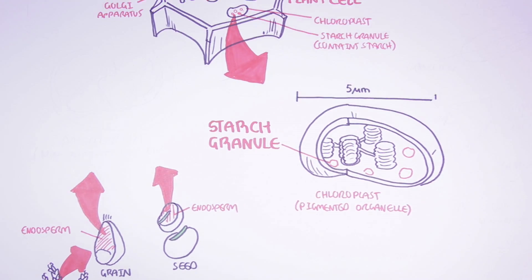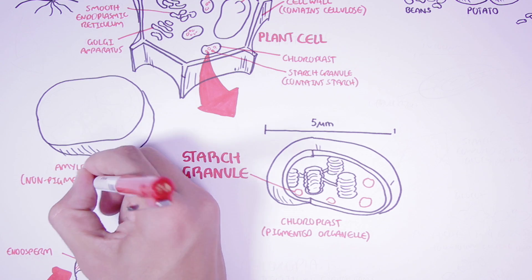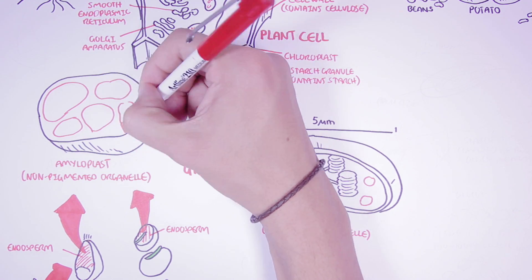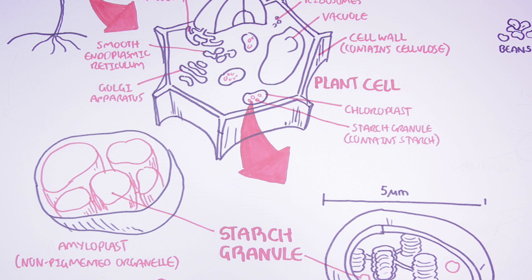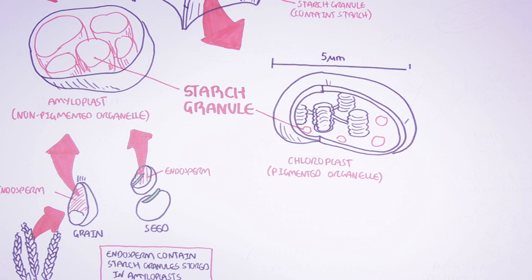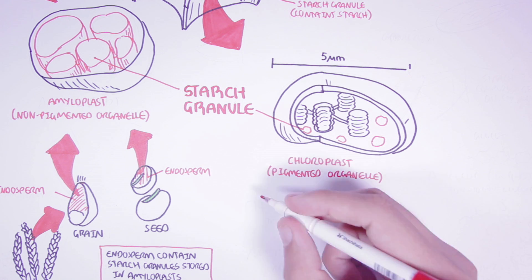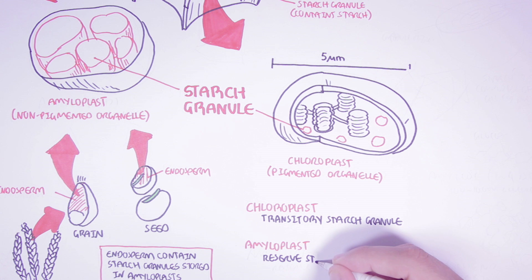If we look into the endosperm area of the grain and seed, we can find amyloplasts. Amyloplasts are non-pigmented organelles — non-pigmented because they contain no color. Amyloplasts are made up mostly of starch granules. Seeds contain many amyloplasts because they need stored energy as they grow, and roots of plants also contain many amyloplasts for energy reserves. To differentiate: chloroplasts contain transitory starch granules, while amyloplasts have reserve starch granules.